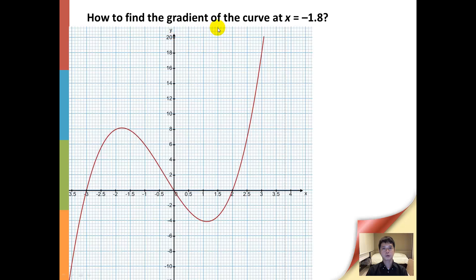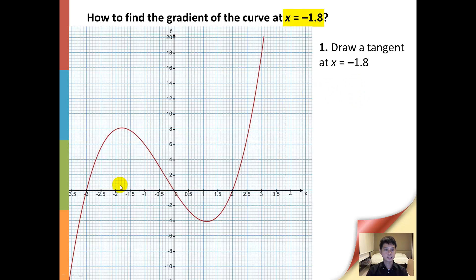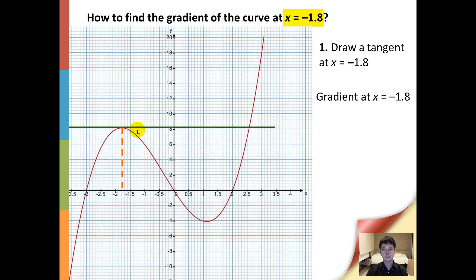Finally, we shall look at the gradient of the curve at x equals negative 1.8. To find the gradient, we need to draw the tangent at x equals negative 1.8, and we have a horizontal line. Therefore, do you know what the gradient is here at x equals negative 1.8? Yes, the gradient is simply equal to 0.